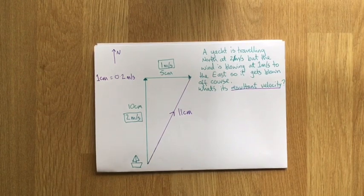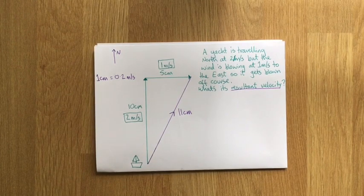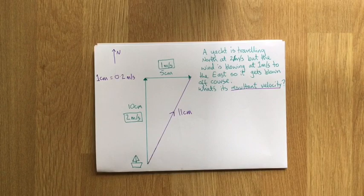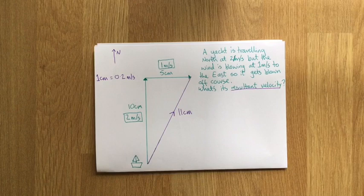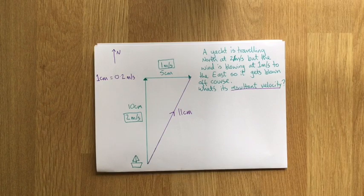Today we're going to look at two other vector and scalar quantities, speed and velocity. Speed is how fast you're going, velocity is how fast you're going in a particular direction. I'm just going to go through a couple of examples. They're very similar to the displacement and distance ones from last week.